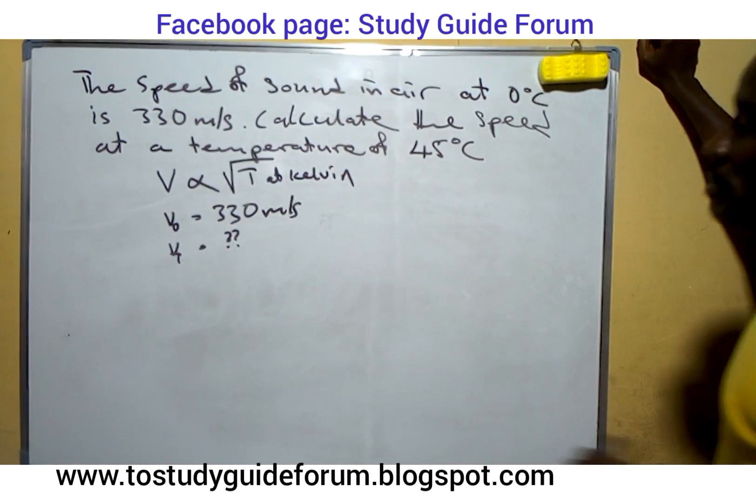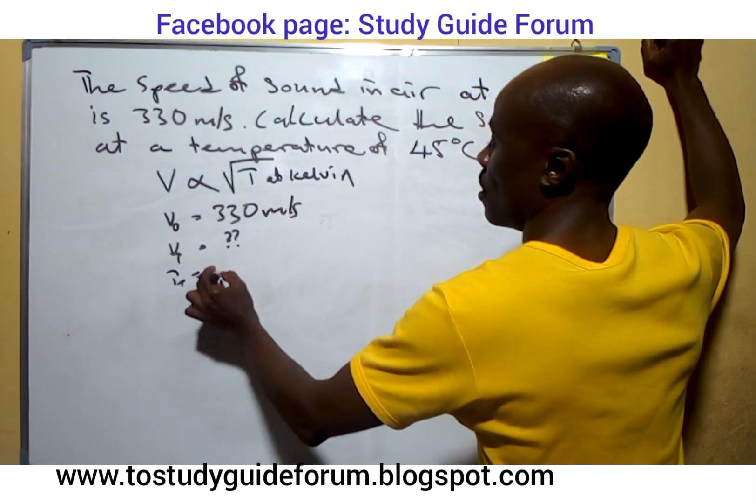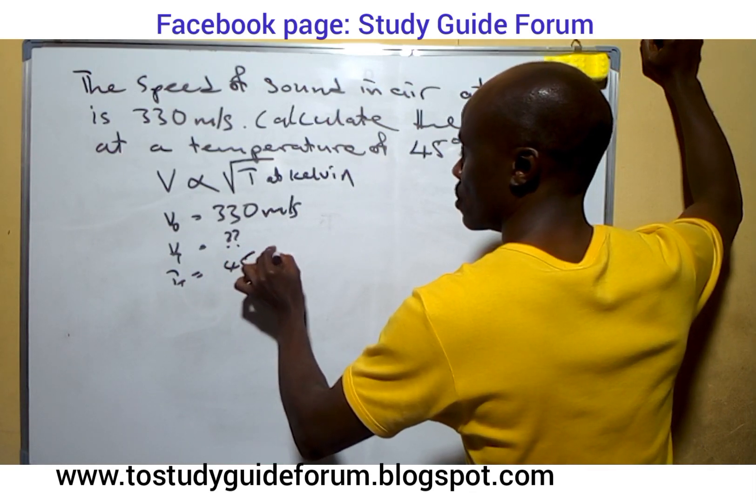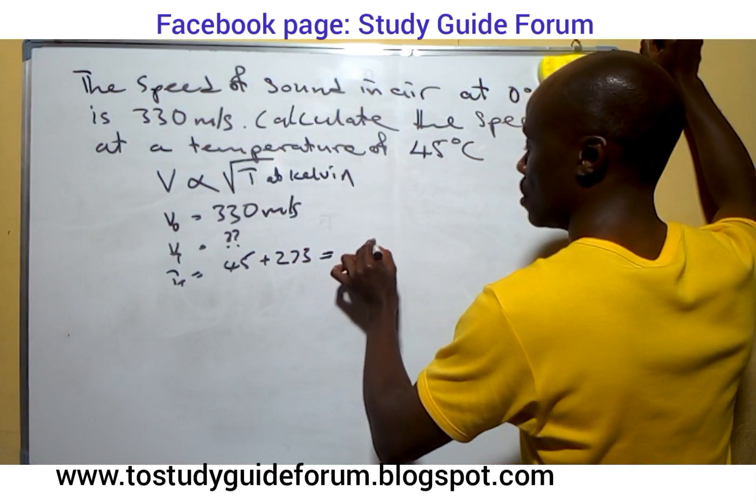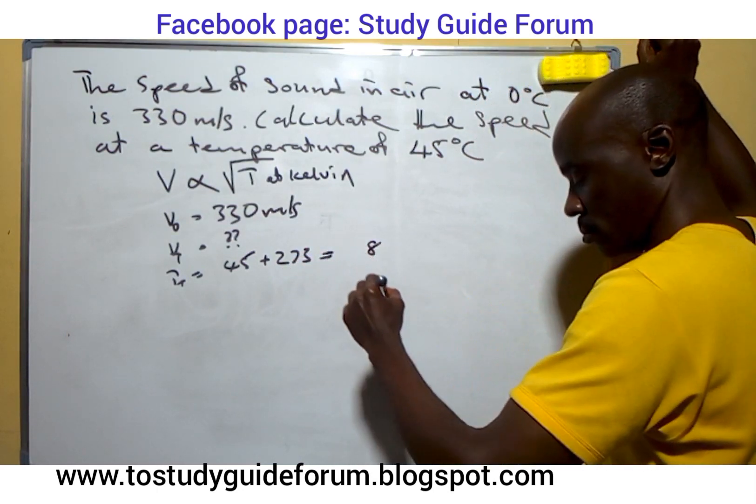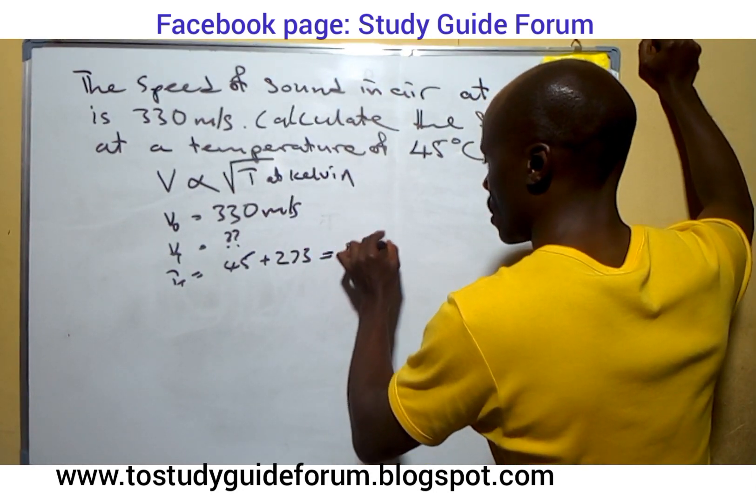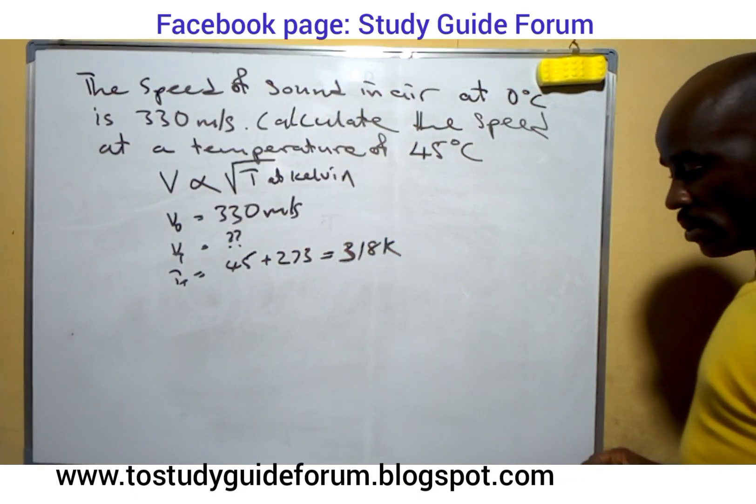Temperature at T, we have it to be 45 plus 273. That will give us 318 Kelvin. That is what we have there.